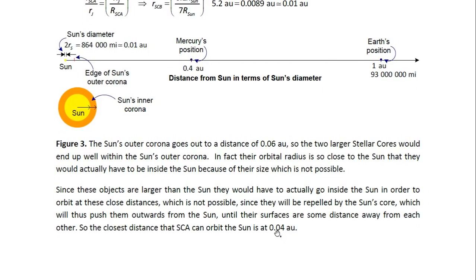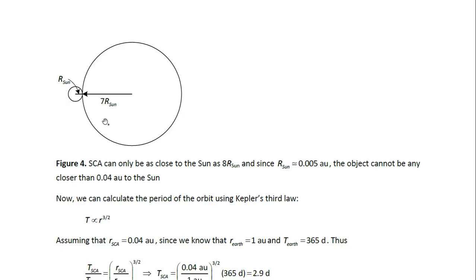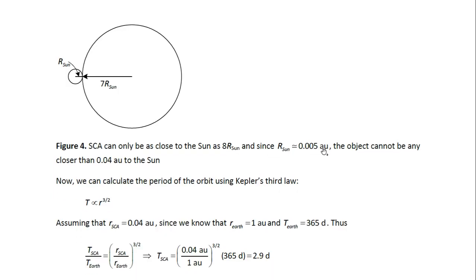Which is not possible since they will be repelled by the Sun's core, which will thus push them outwards from the Sun until these surfaces are some distance away from each other. So the closest distance, the stellar core A, and that was the largest one, seven times the size of the Sun, is at 0.04 AU. And we can see that from this diagram, because if the Sun has radius r_Sun, this object has radius seven times r_Sun. So the total distance between the center of the Sun and the center of this object has to be eight times r_Sun. And r_Sun is 0.005 AU. And eight times that gives us 0.04 AU. So this distance, this minimum distance, is 0.04 AU.